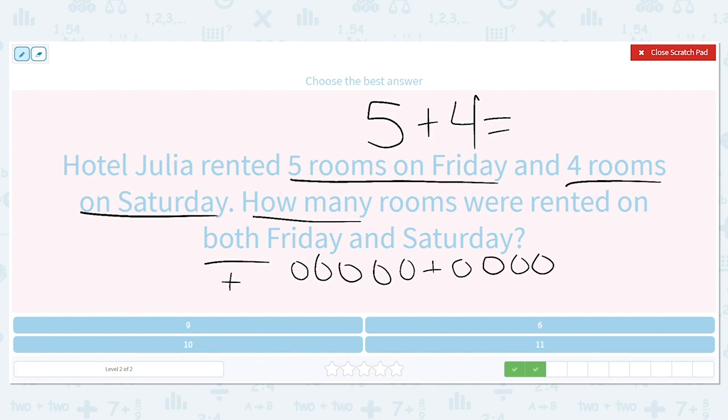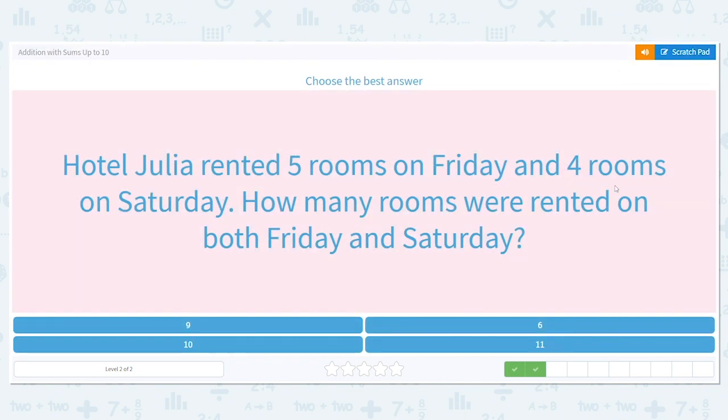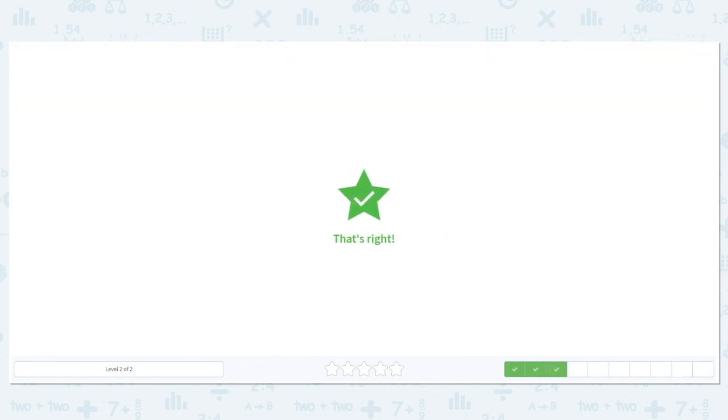How many is that in all? We have five, six, seven, eight, nine. So a total of nine rooms were reserved.